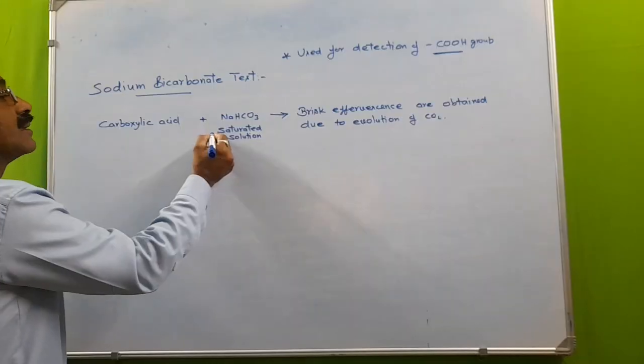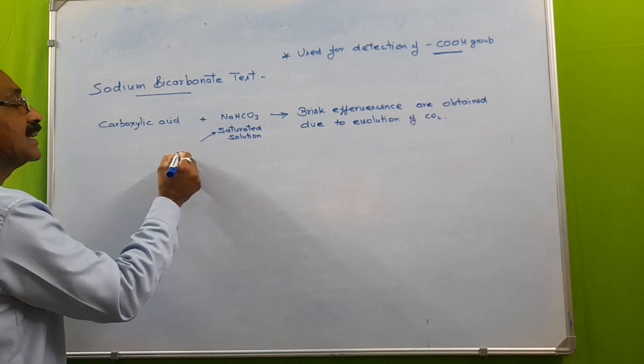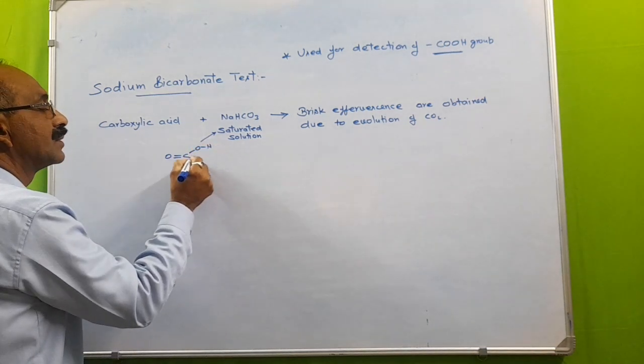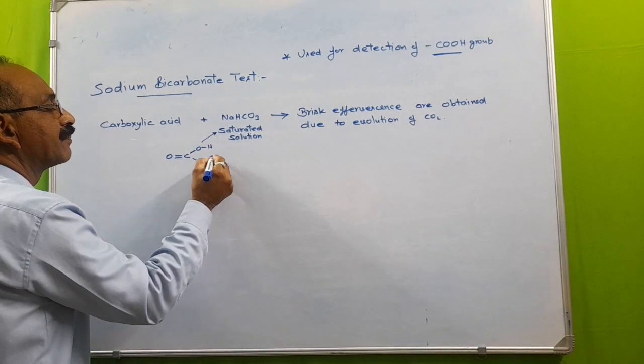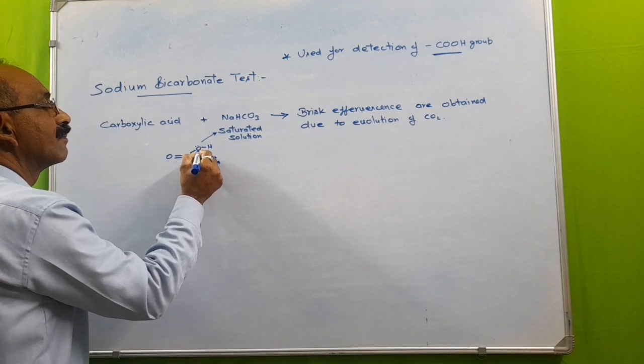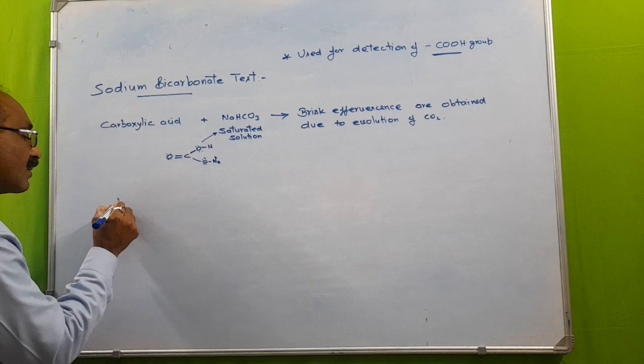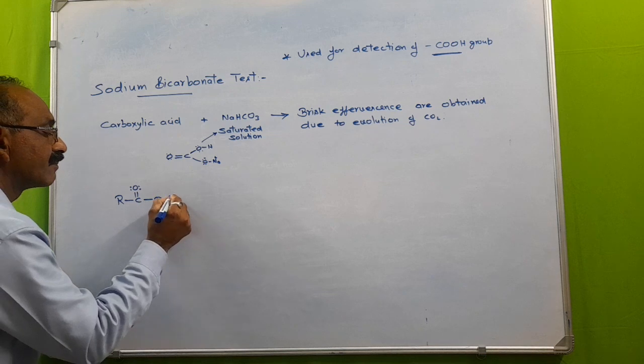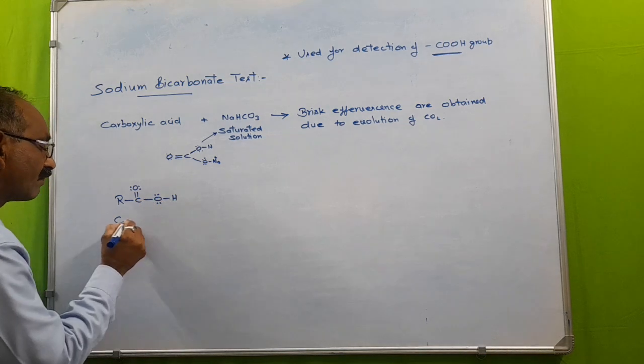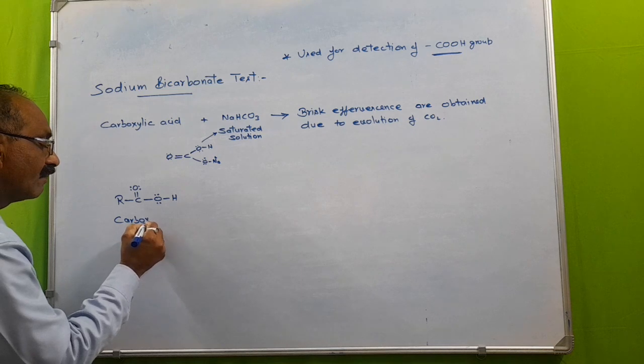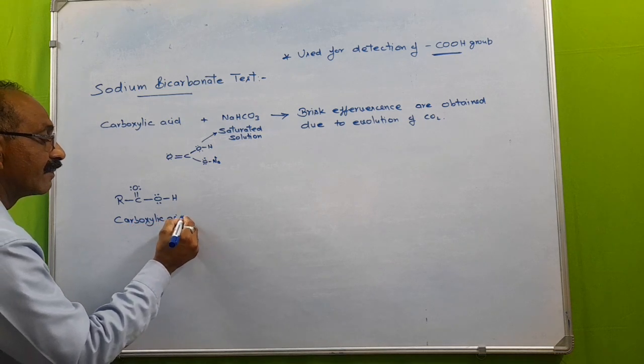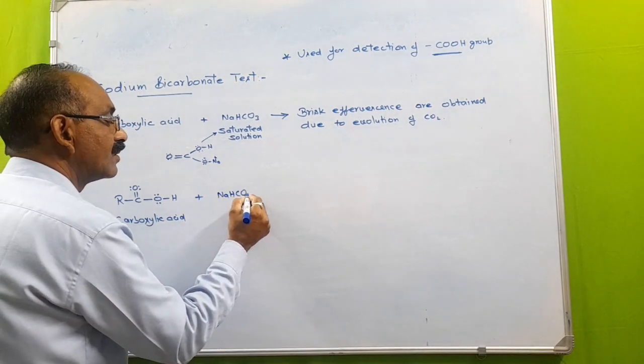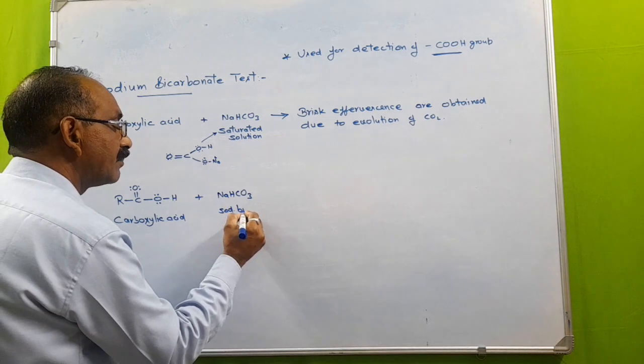What actually happens here? The structure of NaHCO3 is C double bond O, here OH, O Na. Let this be our carboxylic acid. Sodium bicarbonate, when treated with saturated solution of sodium bicarbonate...